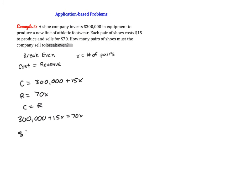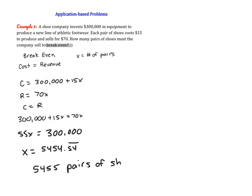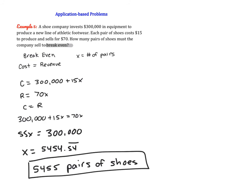We get 55x equals $300,000. Solving gives approximately 5,454.54 repeating. Since this is a word problem, the answer must make real-world sense — you can't produce 0.54 of a pair of shoes. For these types of problems, always round up, because rounding down means you won't produce enough to break even. So the company needs to produce 5,455 pairs of shoes.